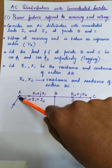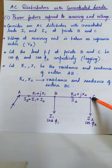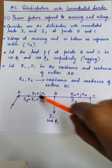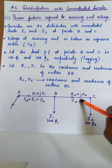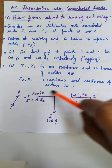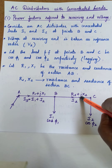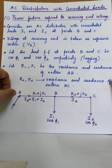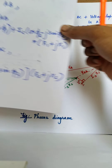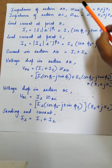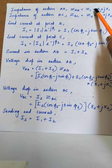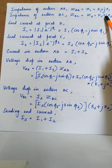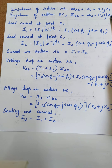The voltage at point A — the sending end voltage — is the voltage at point C, that is the receiving end voltage, plus the voltage drop in BC plus the voltage drop in AB. We know the current as well as the impedance in both BC and AB sections. The impedance of section AB is ZAB which is R1 plus JX1. The impedance of section BC is ZBC equal to R2 plus JX2.